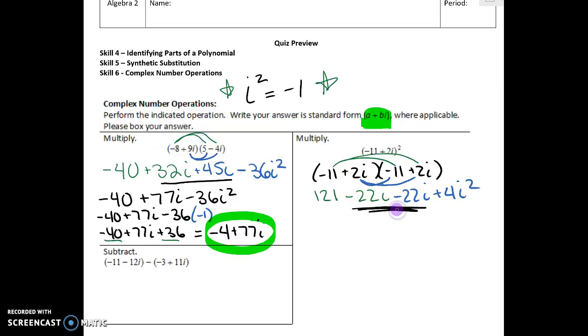Again, it kind of looks like we're done, but you need to be substituting in i squared equals negative 1. So you've got +4 times (-1), which gives you 121 - 44i - 4. Our last step is to combine these like terms. Your final answer: 121 - 4 is 117 - 44i. That would be your final answer there.